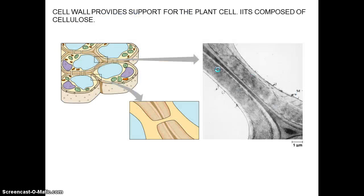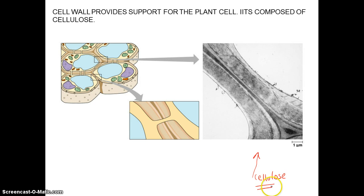The cell wall gives the plant cell its rigidity and is composed of a carbohydrate called cellulose. Also notice within the cell wall you have pores called plasmodesmata, so these cells can communicate with each other.